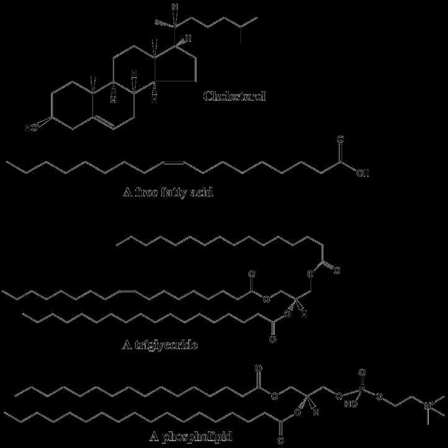Examples of biologically important fatty acids include the eicosanoids, derived primarily from arachidonic acid and icosapentaenoic acid, that include prostaglandins, leukotrienes, and thromboxanes. Docosahexaenoic acid is also important in biological systems. Other major lipid classes in the fatty acid category are the fatty esters and fatty amides. Fatty esters include important biochemical intermediates such as wax esters, fatty acid thioester coenzyme derivatives, fatty acid thioester ACP derivatives and fatty acid carnitines. The fatty amides include N-acyl ethanolamines, such as the cannabinoid neurotransmitter anandamide.